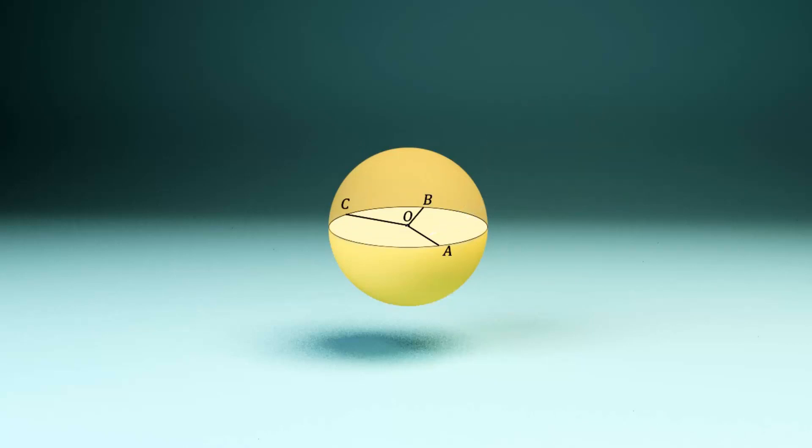Point O is the centre of this sphere, while line OA, OB, OC are its radii and are each equal in length.